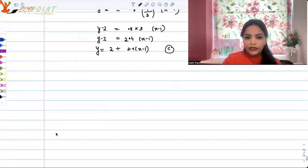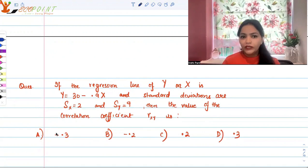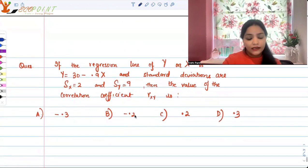Let's move to the next question. From the same concept, another question: if this time the regression line of y on x is y equals 30 minus 0.9x and standard deviations are s_x equals 2 and s_y equals 9, then find the value of the correlation coefficient r. These are our options. Let's see how to solve this.